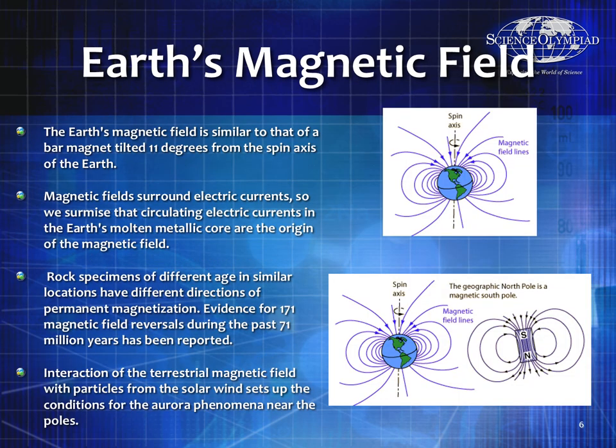Earth's magnetic field is why we use compasses for navigation. Keep in mind that the magnetic poles do not exactly line up with the geographic poles, which is the spin axis of the Earth. The geographic north pole is really near the magnetic south pole — that's why the north pole of your compass points north.